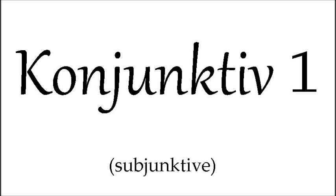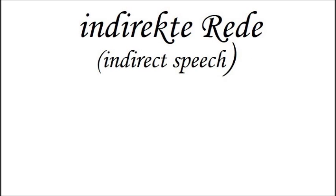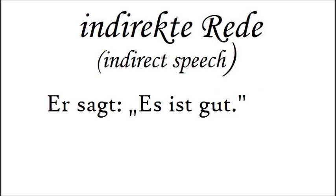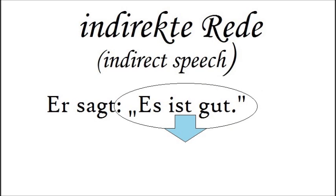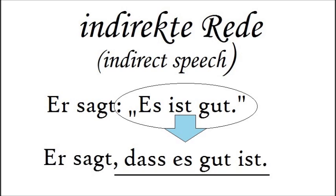The Konjunktiv 1 is mostly used in indirect speech — that is, when you take someone's statement and use it as part of a sentence, as opposed to quoting it. For example, direct speech: 'Er sagt, es ist gut' — 'He said, it is good.' In indirect speech, this statement becomes a subclause: 'Er sagt, dass es gut ist' — 'He said, that it is good.'